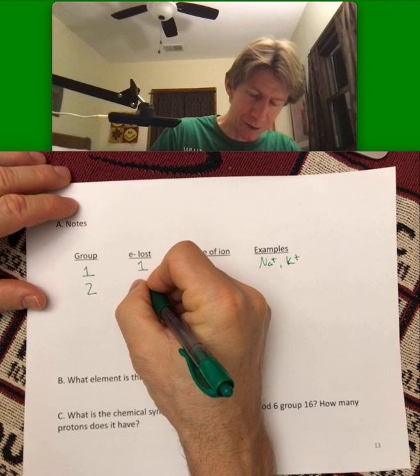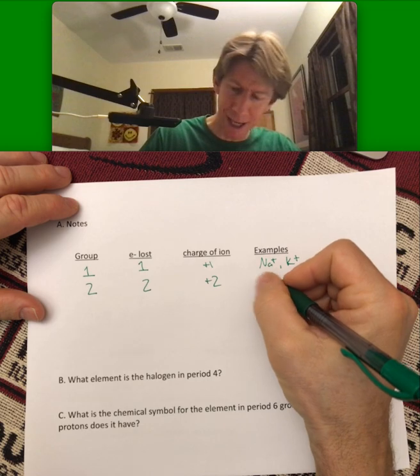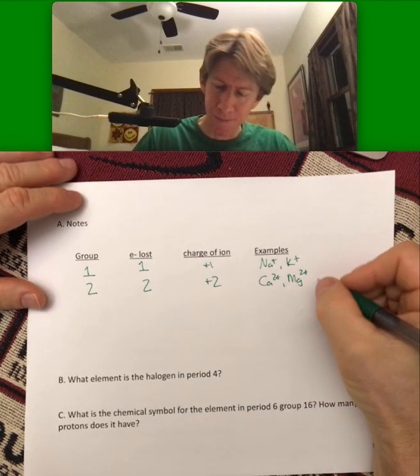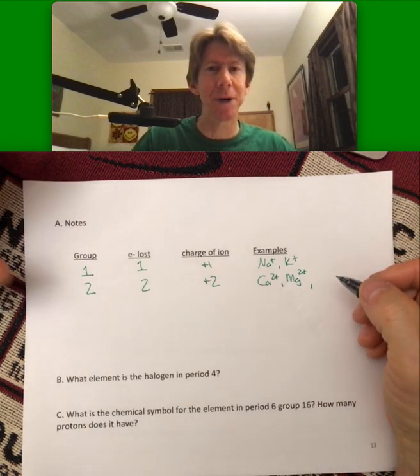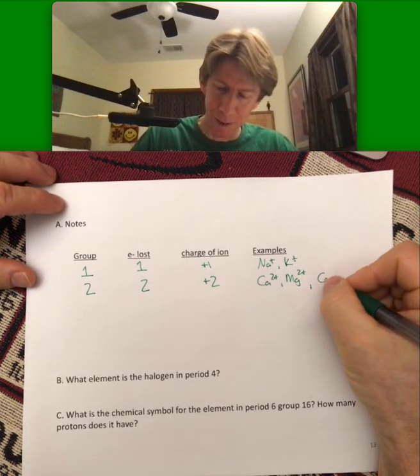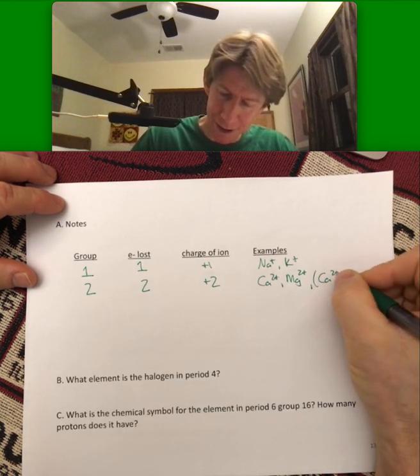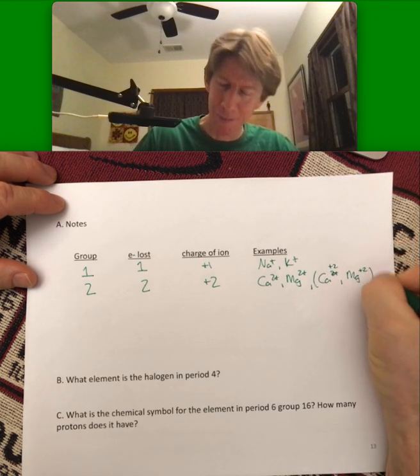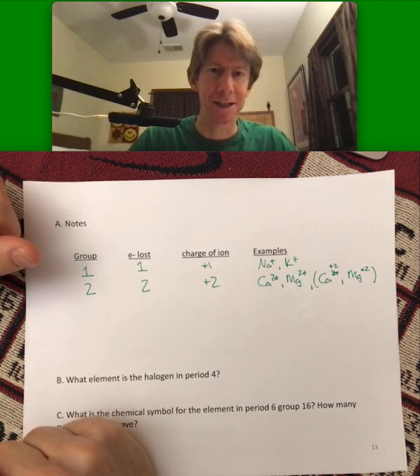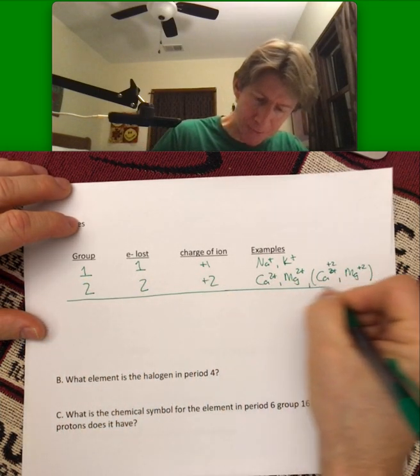So group two is going to lose two electrons. It's going to be plus two. Examples of that are going to be calcium two plus and magnesium two plus. And I don't know, it is slightly better form to write calcium two plus than calcium plus two, but I don't really care. Either way is good. Group, all right, I think I'm going to make a little break here.